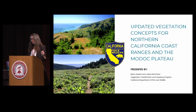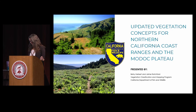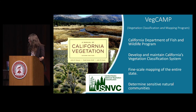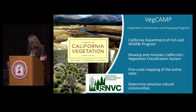My name is Betsy, and I'll be talking about two of the projects that Rochelle mentioned: the Northern California Coast Ranges and the MODOK Plateau. So, you learned who VegCamp is — just to touch on that again, we develop and maintain California's state classification system, so we define and describe natural vegetation types found in the state.